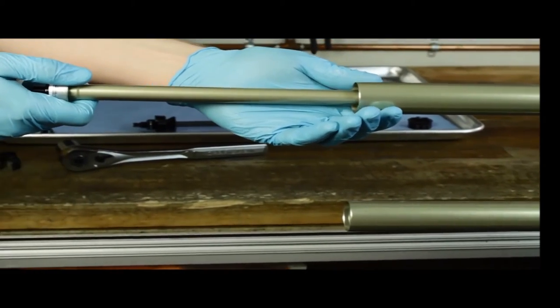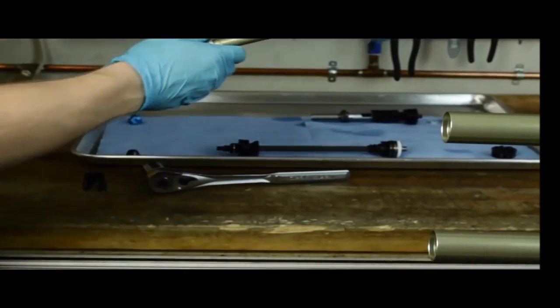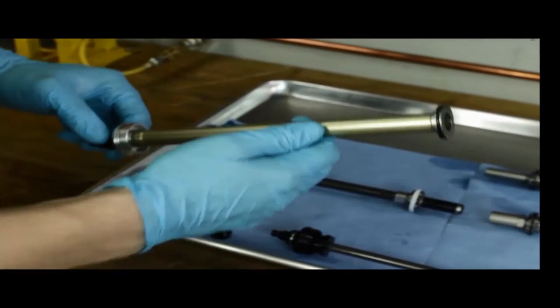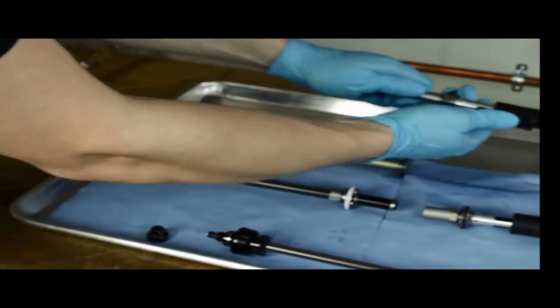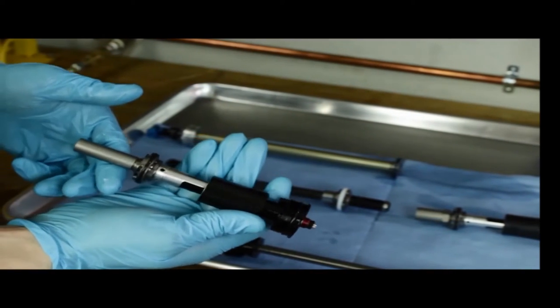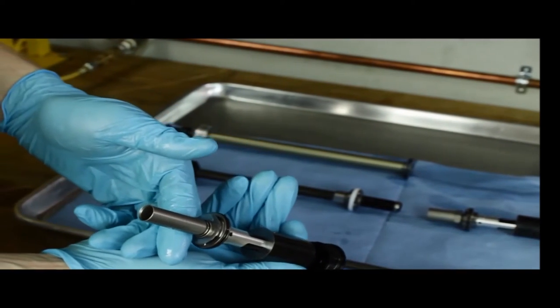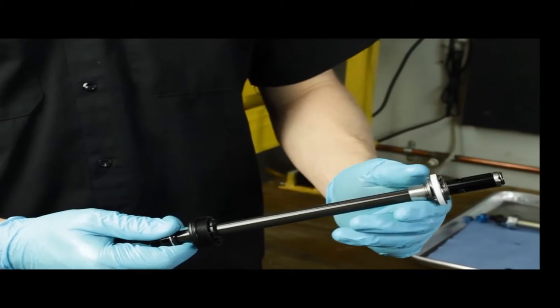If you're disassembling a Matic expert, you'll notice that the rebound assembly looks different from the Matic pro. The major difference between the Matic pro and the Matic expert is that the pro utilizes a half-cartridge damper system while the expert utilizes an in-leg damper system.